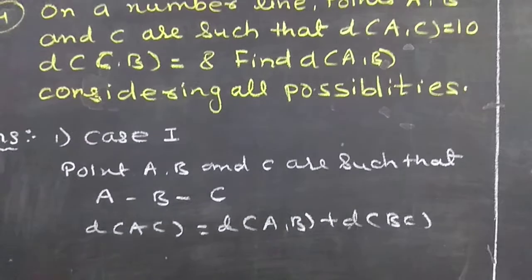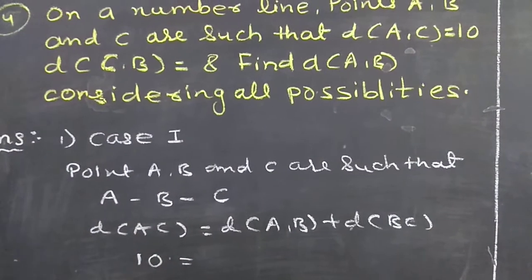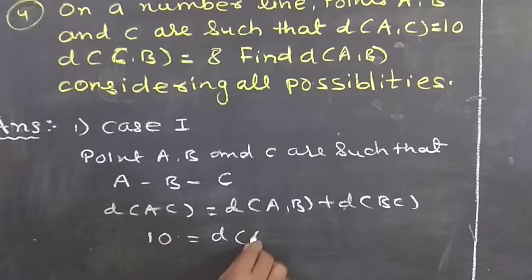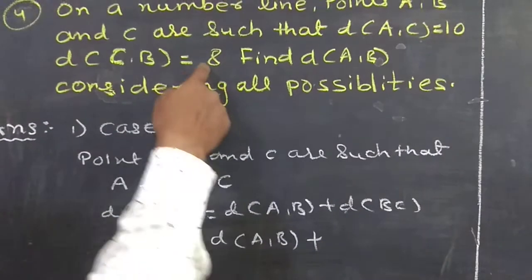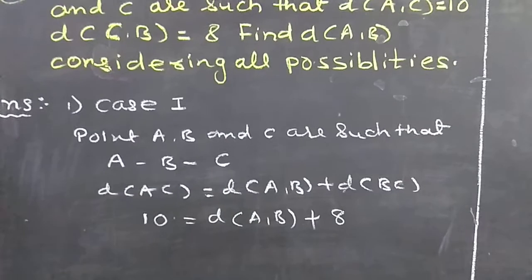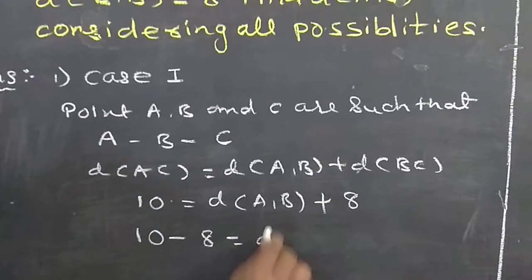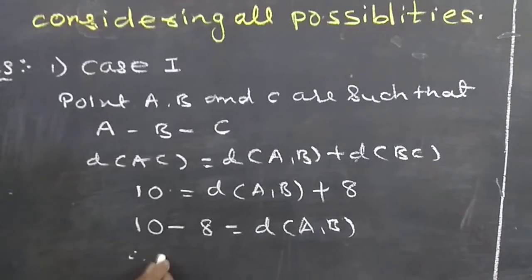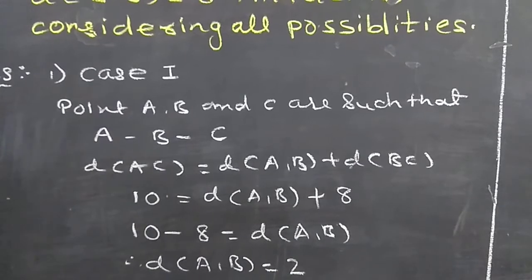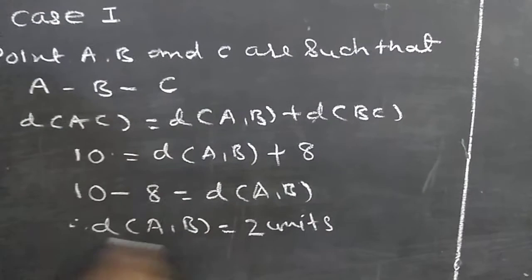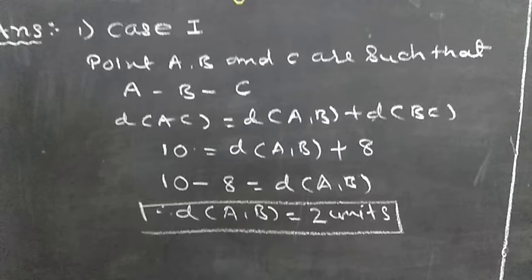Seeing the question, AC is given as 10. So 10 equals distance AB plus distance BC. Distance BC is given as 8. So 10 equals distance AB plus 8. Rearranging, distance AB equals 10 minus 8, which equals 2 units. This was all about case 1, your first possibility.